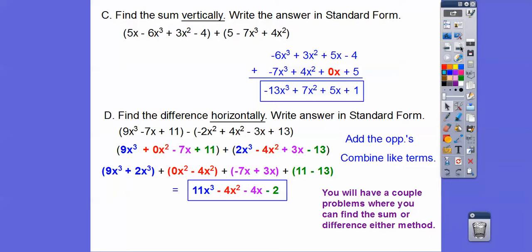And then you'll have a couple that you can do any method that you want right there. So on the ones that say do vertically, we want you to do this method. On the ones that say horizontally, we want you to do this method and we'll give you a couple that you can do whichever method you choose.